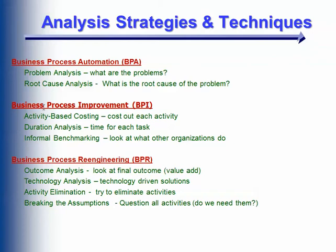Some approaches associated with business process improvement include activity-based costing: look at every single thing you do as part of fulfilling work — maybe one person checks your credit score, another checks your work references — and examine the cost of each one of those activities in your current process. Then figure out how you could reduce cost by fixing, adjusting, or removing the most expensive ones. A similar approach is duration analysis: bring your time down on a process by looking at how long each step takes and targeting those to get things done better and faster.